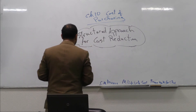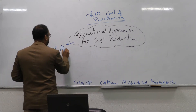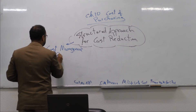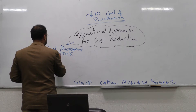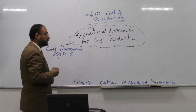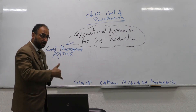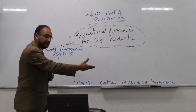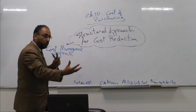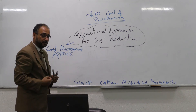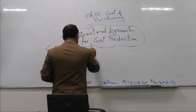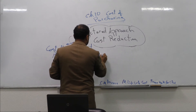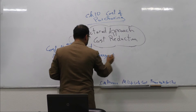Number one, the cost management approach. This figure analyzes the relationship between our enterprise with the previous parties who are the suppliers, and with the upcoming parties who are the customers. So where is the cost reduction? How can we control the cost? The second figure talks about the cost management process.